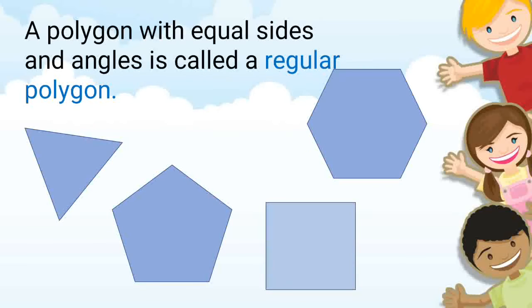Examples of regular polygons include the equilateral triangle, square, regular pentagon, and regular hexagon.